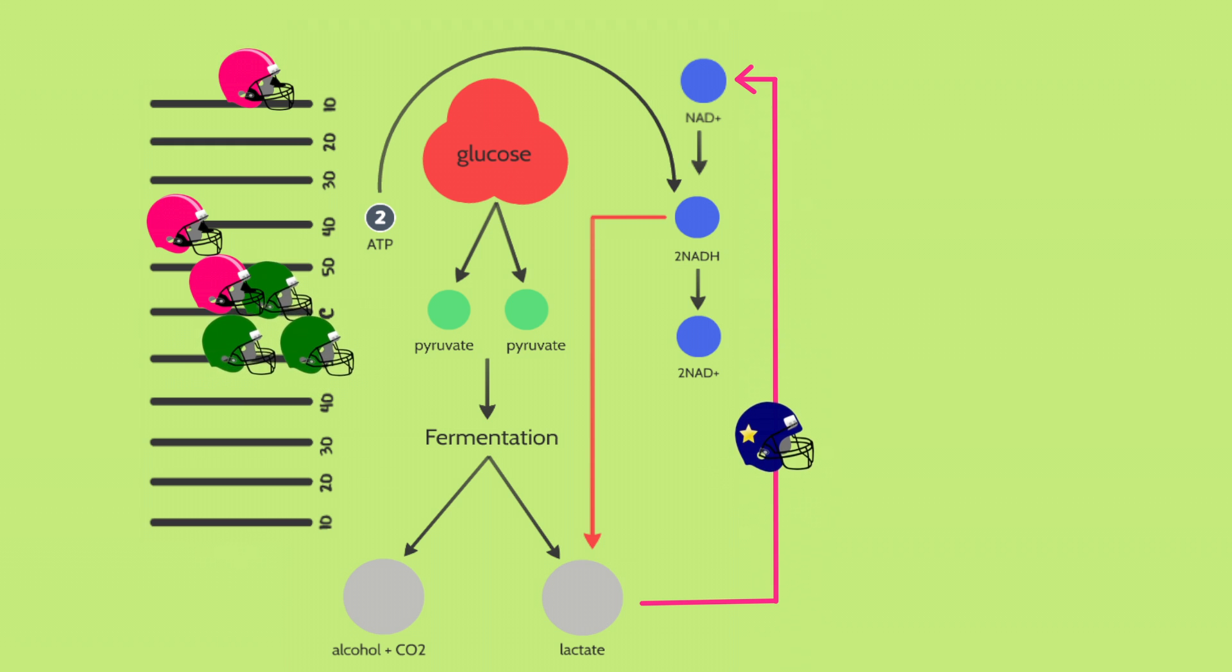This, as you can see, allows glycolysis to occur over and over again, generating the small amount of ATP each time. Although we are not gaining as much ATP as we do through aerobic respiration, this still serves as a sufficient temporary supply of energy, and still gets the team closer to their objective.